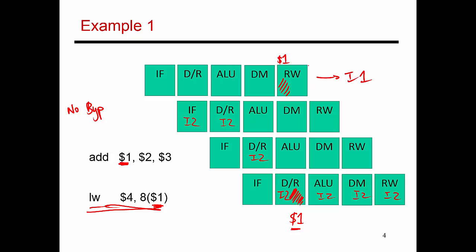I1 finishes in one cycle. Nothing finishes in the next cycle. Nothing finishes in the cycle after that. Then I2 finishes. So we are introducing two stall cycles between I1 and I2 in this case. Without bypassing, I will have two stall cycles.